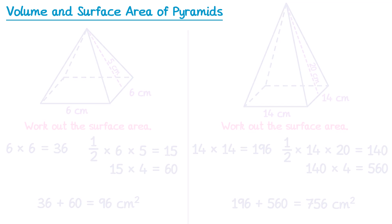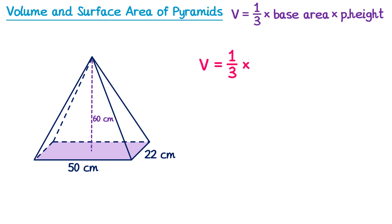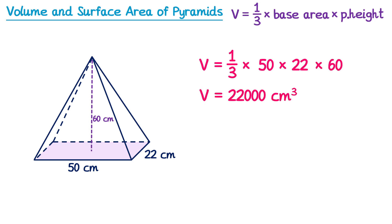Now let's have a look at one final pyramid — this one is a little bit different. Its base is no longer a square but a rectangle. The formula for volume still applies: one-third multiplied by the base area multiplied by the perpendicular height. So volume equals one-third multiplied by the base area — the base is a rectangle, 50 by 22, so its area is 50 multiplied by 22 — and then multiplied by the perpendicular height, which is 60. Working this out on the calculator gives 22,000 cm³. For the volume there's no major change; we just use the area of a rectangle rather than the area of a square.